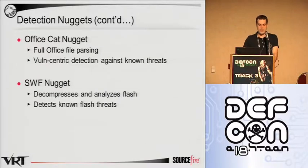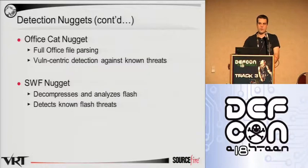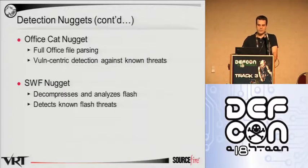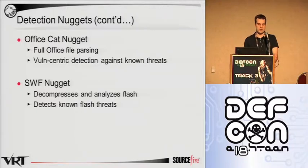We've also got an OfficeCat nugget and a Flash nugget. OfficeCat is an in-house ongoing VRT command line utility that allows you to parse Office files and look for known vulnerabilities in them — probably our earliest attempt at addressing the client-side attack issue. We've also got a Flash nugget which can decompress and analyze Flash and detect some known threats.